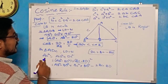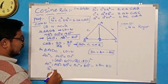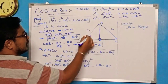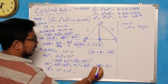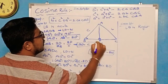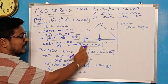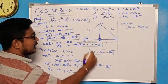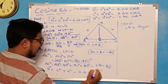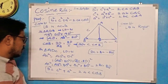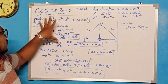Now substituting: AC is b, so b² = AB² + BC² − 2·BC·BD. AB notation is c, so AB² = c². BC notation is a, so BC² = a². And BD = c·cosB. Therefore b² = c² + a² − 2a·c·cosB. This is the cosine rule, proven for Case 1 where angle B is acute.